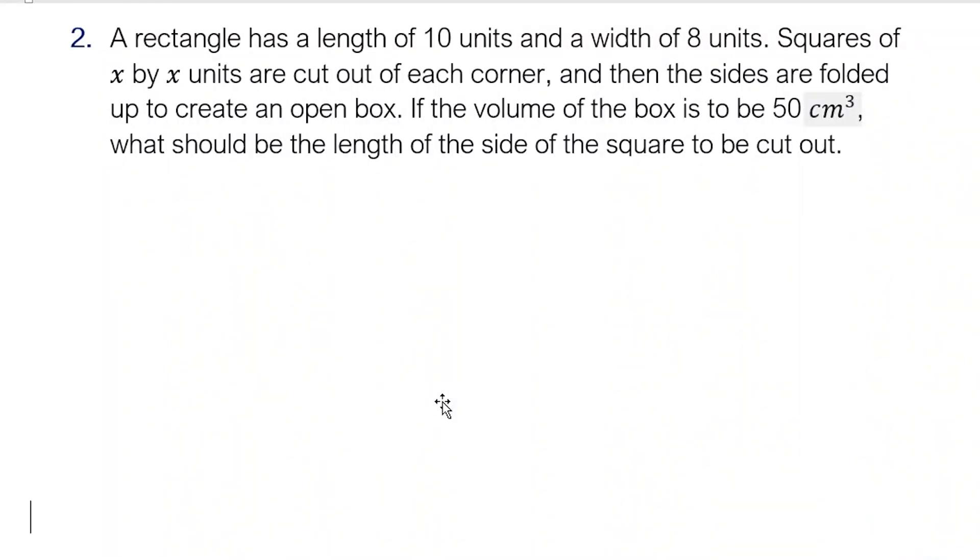Okay, let's have number 2. A rectangle has a length of 10 units and a width of 8 units. Squares of x by x units are cut out of each corner, and then the sides are folded up to create an open box. If the volume of the box is to be 50 cm³, what should be the length of the side of the square to be cut out?